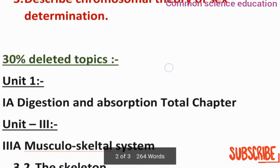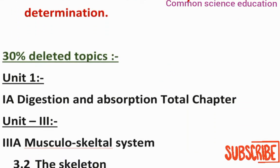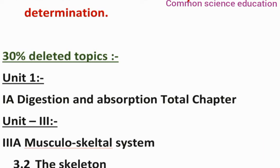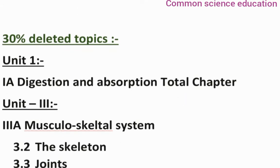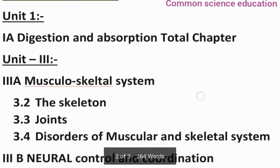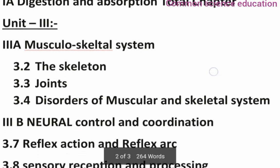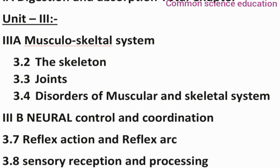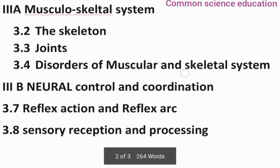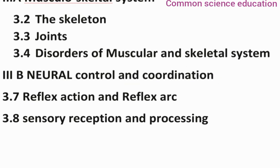This is the 2nd year public examination and 30% of topics are deleted. Unit 1, Digestion and Absorption, is completely deleted. Unit 3 is also completely deleted — this includes 3.2 The Skeleton, 3.3 Joints, and 3.4 Disorders of the Musculoskeletal System.